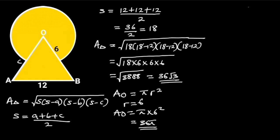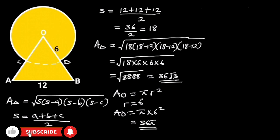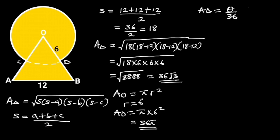Next, let's label this point C and D. Observe that OCD is a sector. Let's find the area of the sector. Since triangle OAB is an equilateral triangle, it follows that each angle of the triangle is 60 degrees. So theta is equal to 60 degrees, and the radius is equal to 6 units.